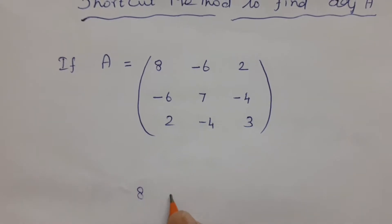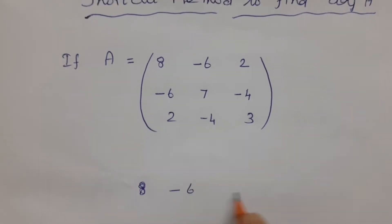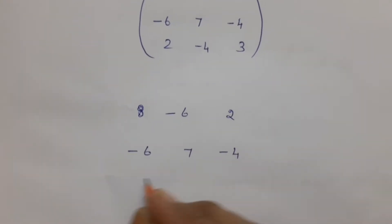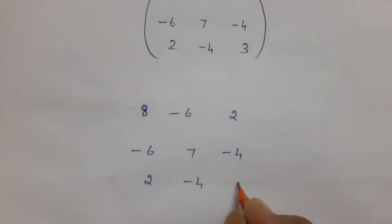So first step, you have to write the given matrix as it is: 8, -6, 2; -6, 7, -4; 2, -4, 3.